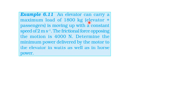So, the elevator mass plus passenger is 1800 kg. It moves with a constant speed of 2 m per second. The frictional force is 4000 N. Find the minimum power delivered by the motor to the elevator in watts and horsepower.